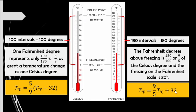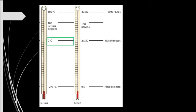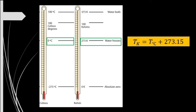For you to easily remember these conversions, it is advisable to know the basis for them. For the Kelvin scale, the freezing point of water is 273.15 Kelvin. To convert Celsius to Kelvin, the formula is: temperature in Kelvin equals temperature in Celsius plus 273.15.